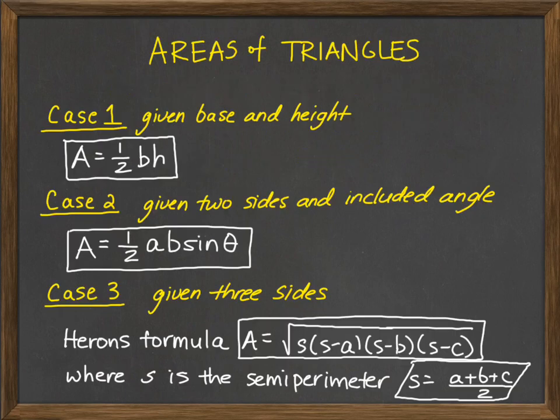In the last video we talked about three distinct cases for finding the area of a triangle. Case one: given the base and height, area equals one-half times base times height. Case two: given two sides and the included angle, area equals one-half times a times b times sine of theta. Case three: given three sides, that's Heron's formula, which hinges on finding the semi-perimeter — the sum of all sides divided by two.